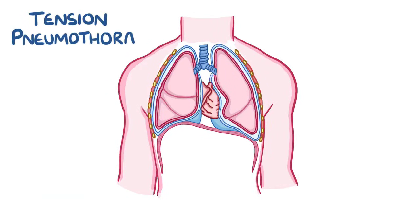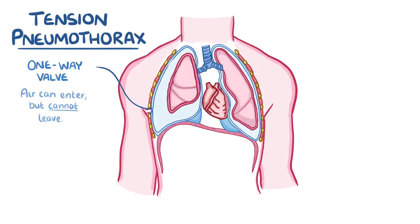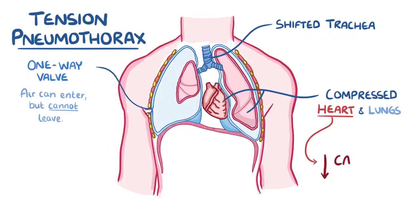Finally, there's tension pneumothorax, which can develop similarly to a spontaneous or traumatic pneumothorax, with the key difference being that it creates a one-way valve for air to flow into the pleural space. Air can enter but cannot leave because a flap of tissue prevents it from going the other way. Over time, air builds up, increasing pressure, and can compress the heart and lungs, making them less functional, and can shift large structures like the trachea. This is particularly dangerous because pressure on the heart can prevent it from filling properly, reducing cardiac output.